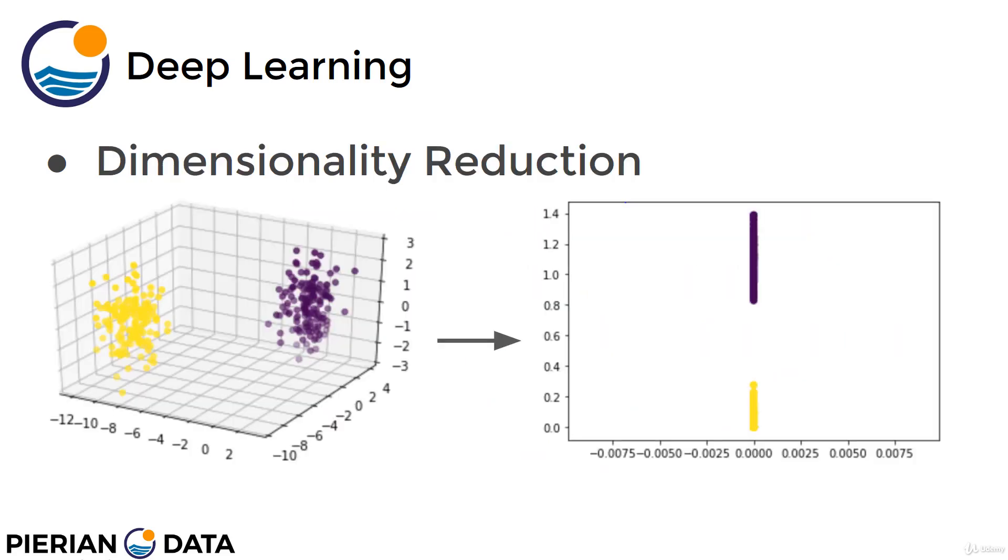So what does this actually look like in practice? Well, later on in the next series of lectures, we're going to explore how we can actually use an autoencoder, split it up into two parts, an encoder and a decoder to perform dimensionality reduction. So we'll be able to actually take a three-dimensional data set and then reduce it down to either two or even one dimensions. Notice here, we have these two clusters and we're actually able to map them to a lower dimensionality space or lower dimensional space and still maintain that separation.